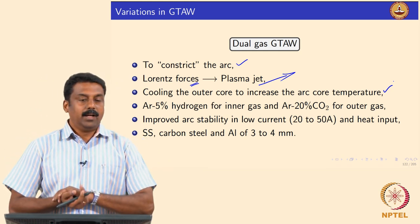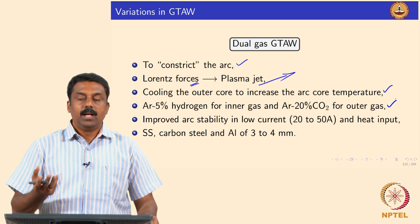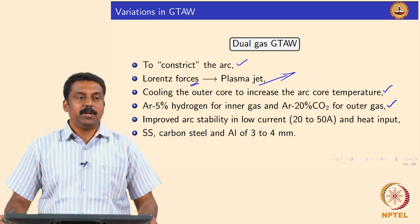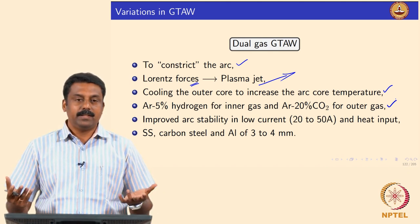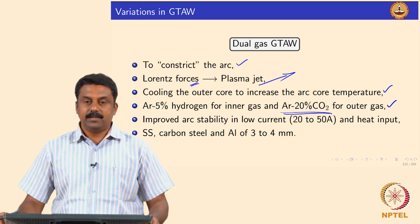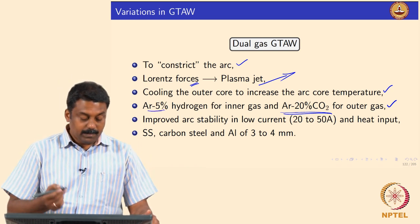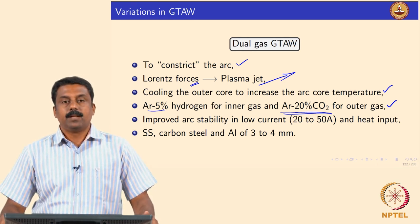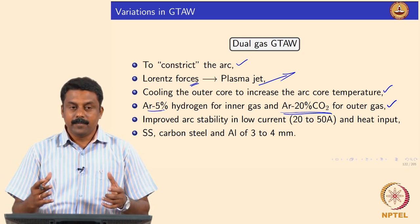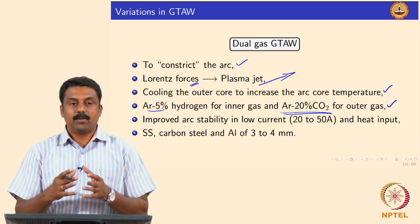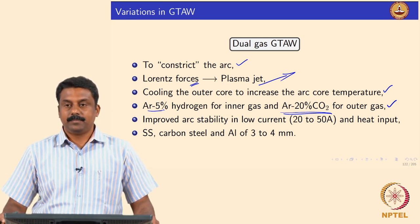We can also use a somewhat cooler gas — argon 20% CO2 — because we need to reduce the temperature; when it ionizes it releases less heat. So the commonly used outer gas is argon 20% CO2. For the inner plasma gas we use argon 5% hydrogen or pure argon. Argon plus 5% hydrogen is used to create more convective effect. We constrict that with a colder outer gas so the plasma jet can be formed and then transferred to the workpiece.